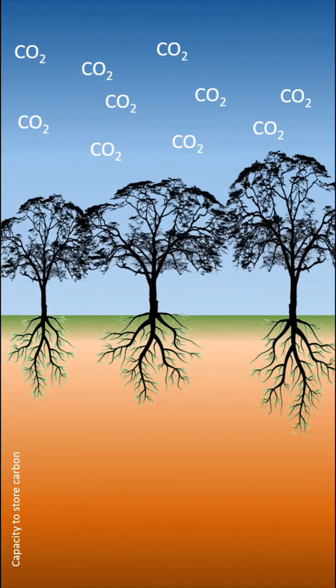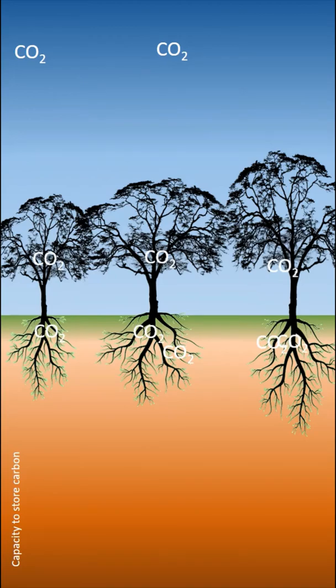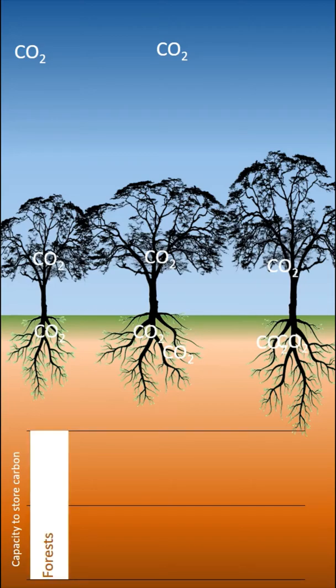Forests are important carbon stocks. A mature tropical forest can store large quantities of carbon both in the trees and in the ground. Planting forests on grasslands is often mentioned as a major possibility to reduce CO2 from the atmosphere because of the high capacity that forests have to bind organic carbon in the vegetation and soils.